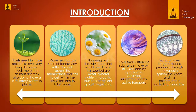Plants do not have a circulatory system in place. Second point: movement across short distances, say within the cell, across membranes, and cell to cell within the tissue, also has to take place. Third point: in flowering plants, the substances that need to be transported are water, mineral nutrients, organic nutrients, and plant growth regulators.